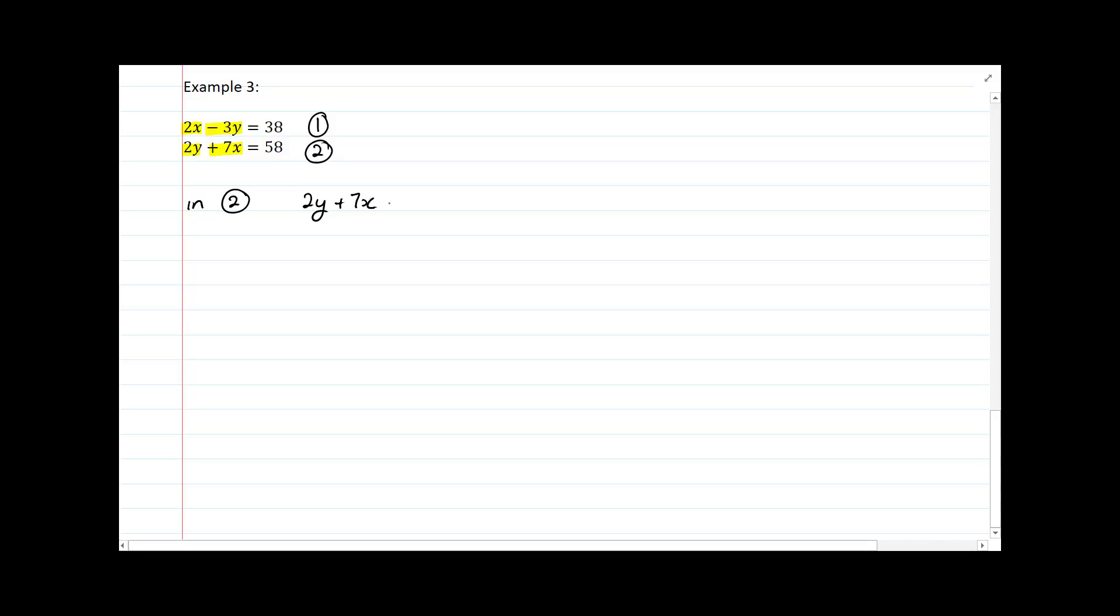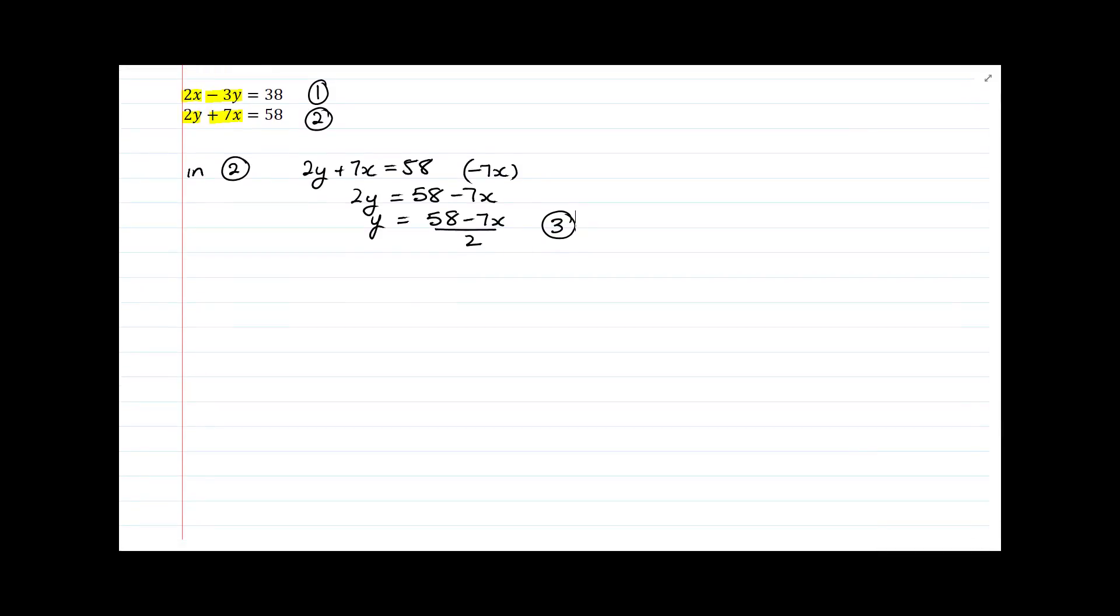2y plus 7x equals 58, and subtracting 7x from both sides, 2y is equal to 58 minus 7x. Dividing by 2, y is equal to 58 minus 7x over 2. And I'll be using this as my substitution. And sometimes you might even want to rename this as equation number 3, so you've got a second naming method that you can call on. So let's now put this into.